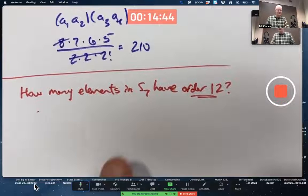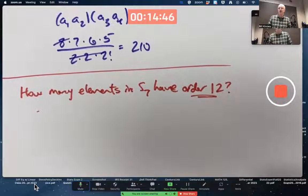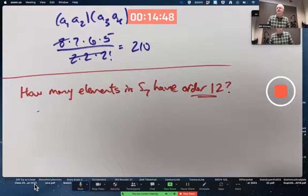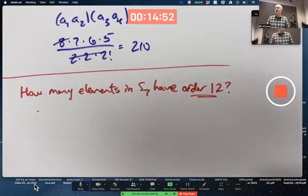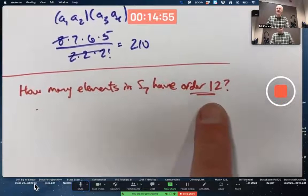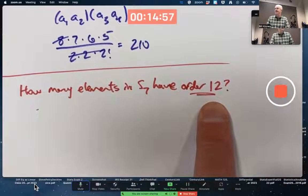But that can't happen in S7 because you only have seven symbols to work with, not 12. If you've got a product of disjoint cycles whose LCM is 12, that would be another way to get it.